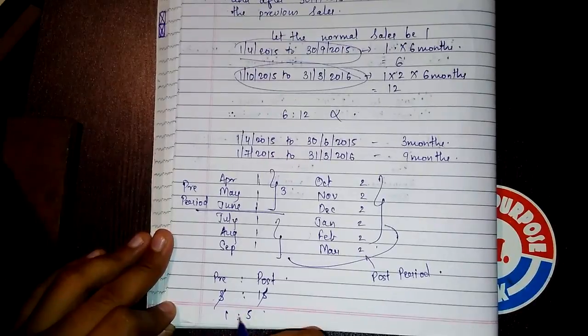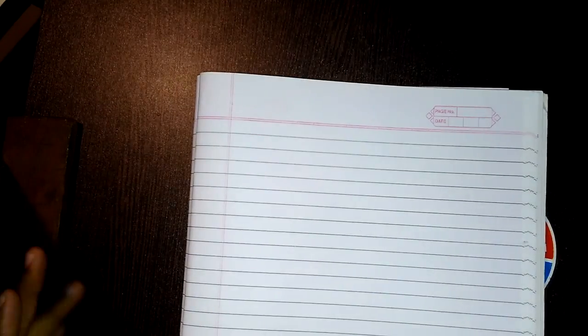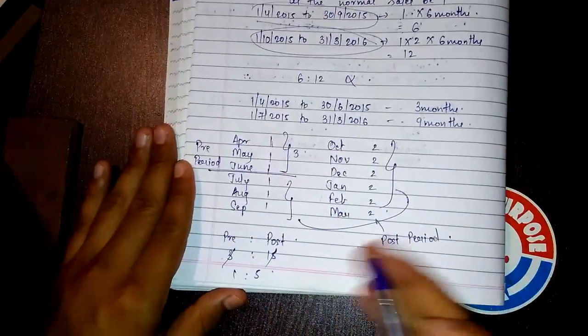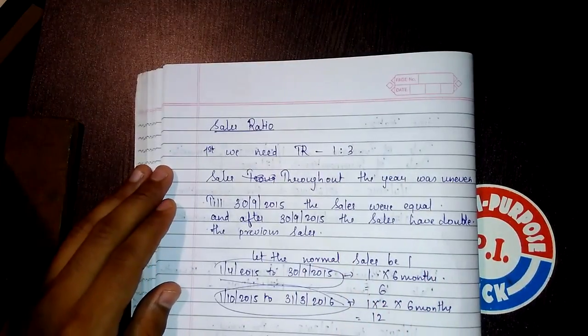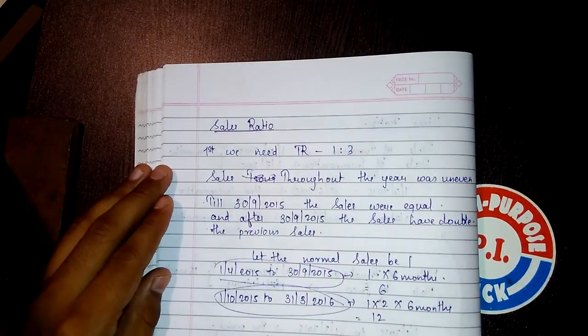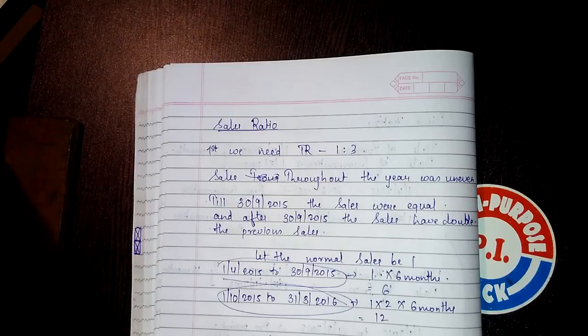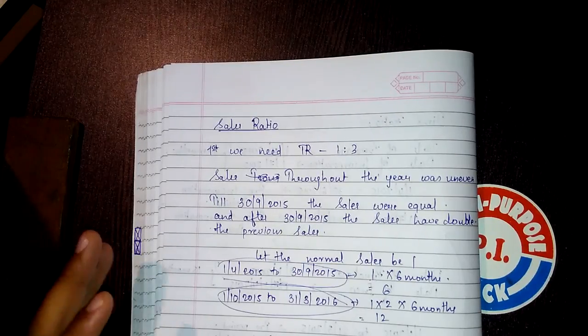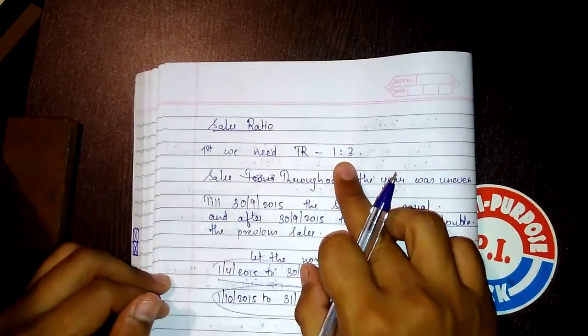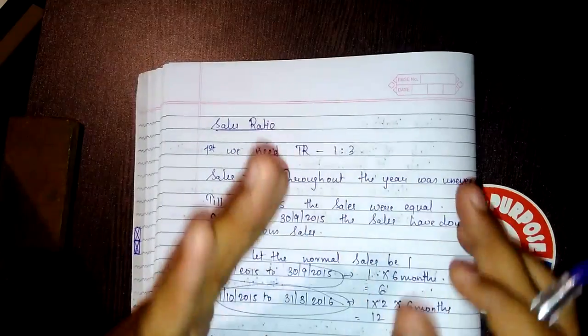Finally we get the sales ratio as 1:5. So whatever sales expenses are there — BBC ASS C² T, meaning backdate brokerage, commission to sales agent, travel agent, advertisement expenses, selling and distribution expenses, sales promotion, carriage outward, cartage outward, tax audit — will be bifurcated in the ratio of 1:5. Time ratio expenses — STOP MR ED, meaning salary, telephone, traveling, telegram and postage, office and administrative expenses, printing and stationery, miscellaneous, electricity, rent, rates and taxes, depreciation — will be bifurcated in the ratio of 1:3.